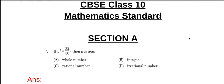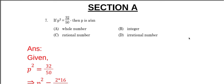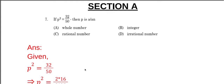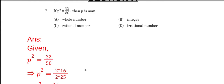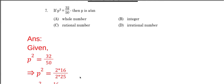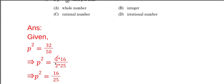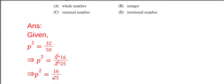Let's find the answer. Here, given P squared equals 32 by 50. We'll simplify this fraction — 32 is equal to 2 into 16, and 50 is equal to 2 into 25. The 2 and 2 will be cancelled. Therefore, P squared is equal to 16 divided by 25.